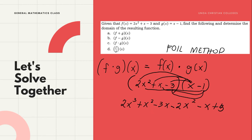Now combine like terms. 2x³ has no similar term, so copy it. For degree 2: x² minus 2x² — the coefficient is 1 minus 2 = negative 1, giving negative x². For degree 1: negative 3x minus x — coefficients negative 3 minus 1 = negative 4, giving negative 4x.